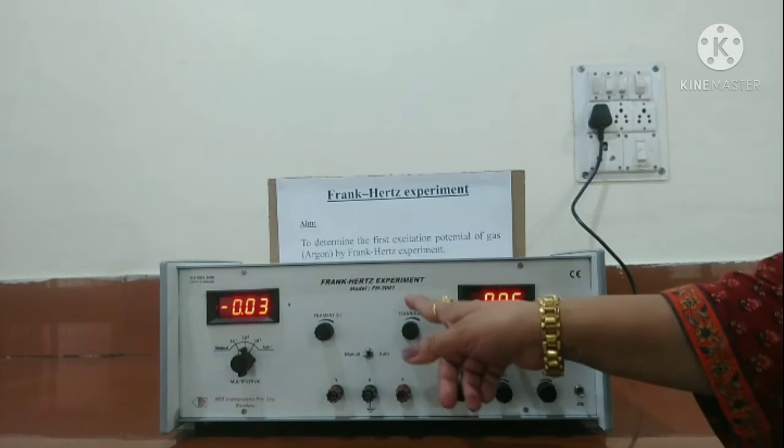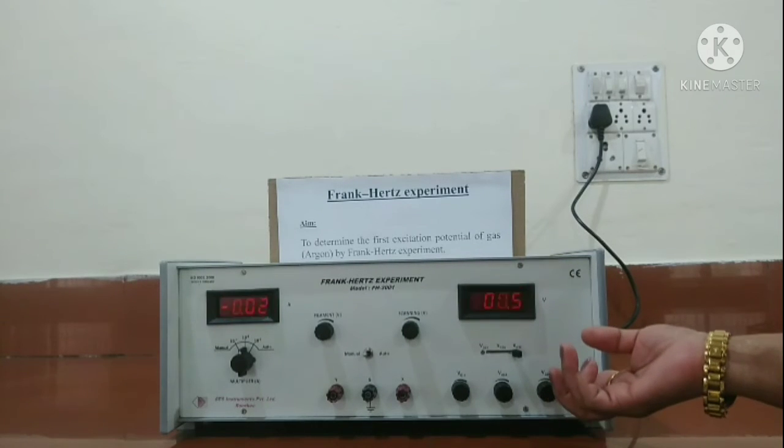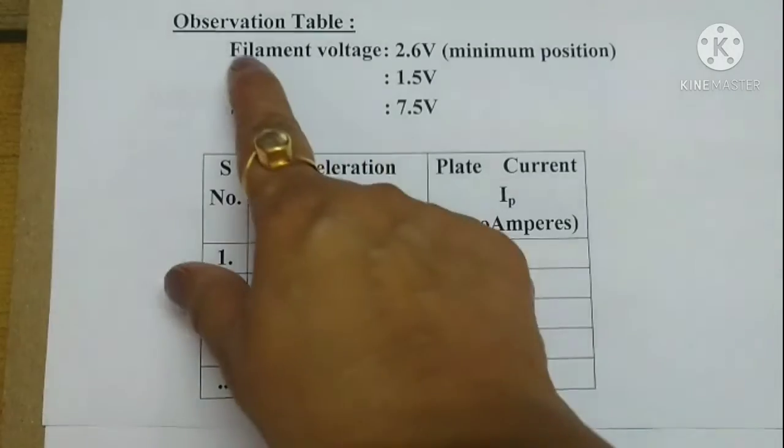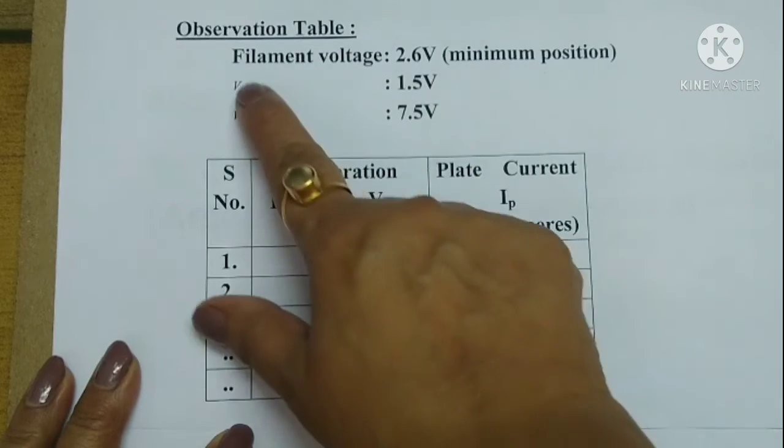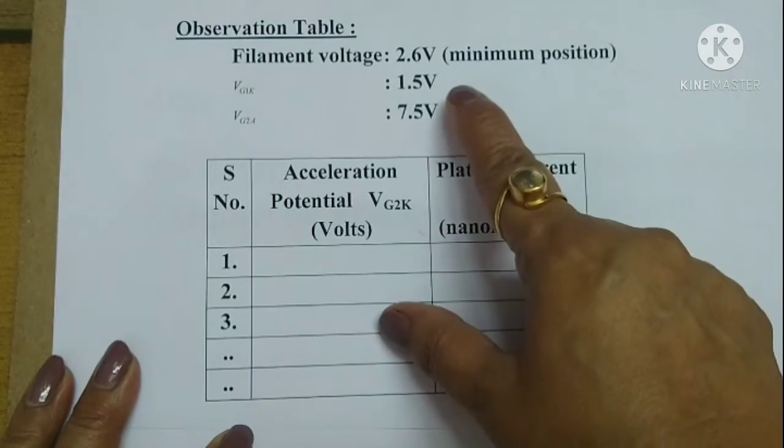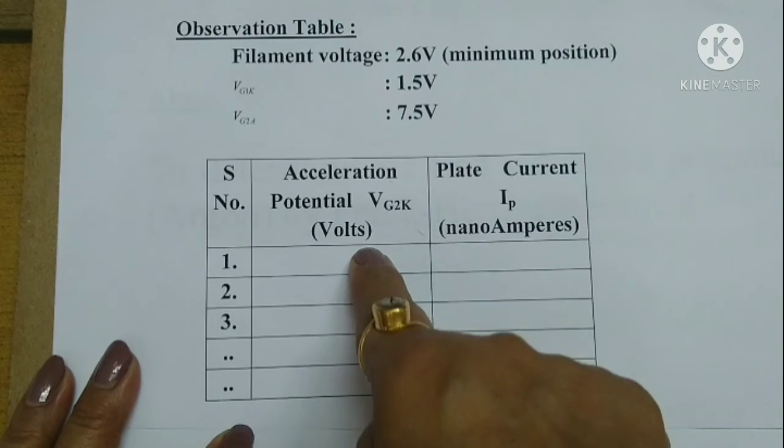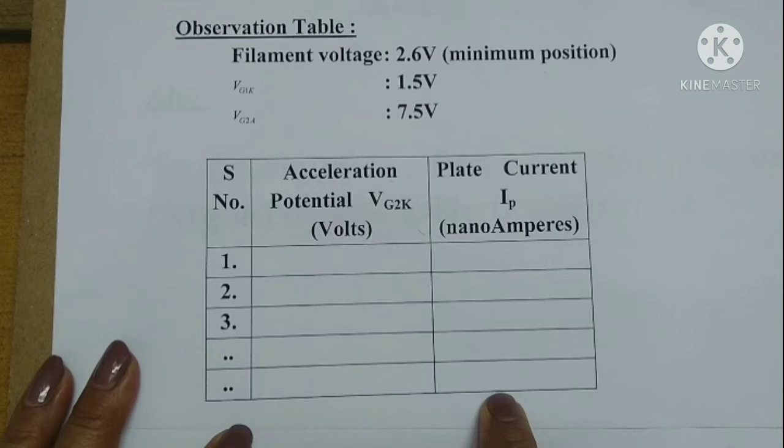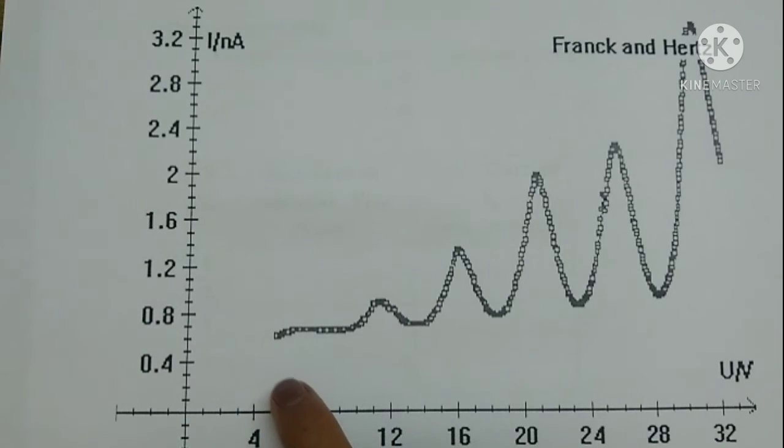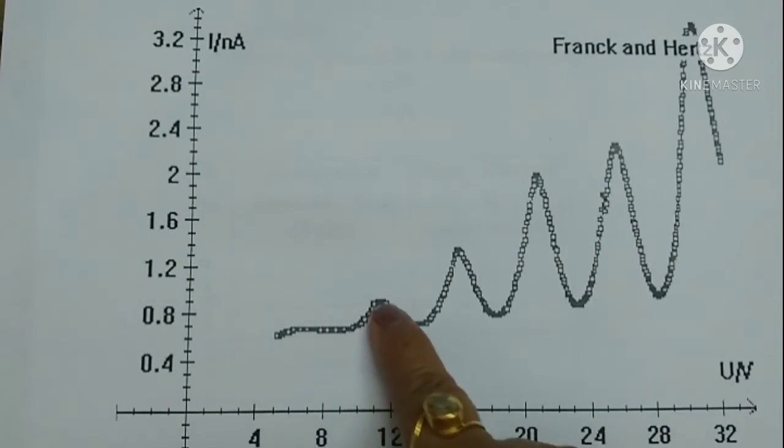Now let us proceed for the next step. Whatever readings we have taken, we must write down in the observation table. First we will note down the filament voltage, then VG1K and VG2A voltage, and then we will note down the variation of plate current with respect to the accelerating potential and plot the graph. On the x-axis we plot potential and on the y-axis plate current.